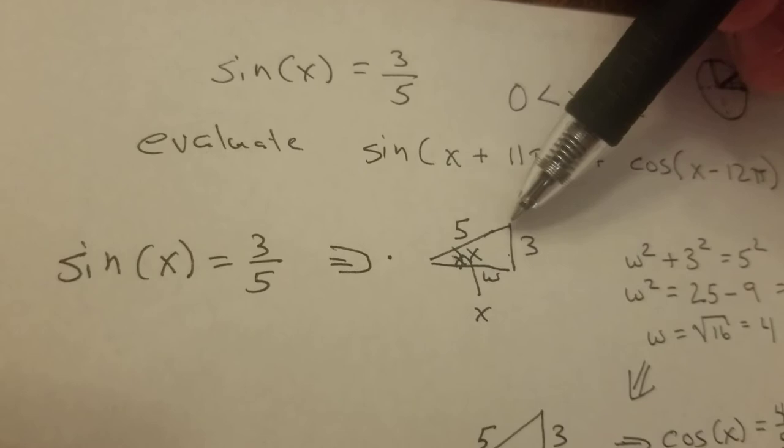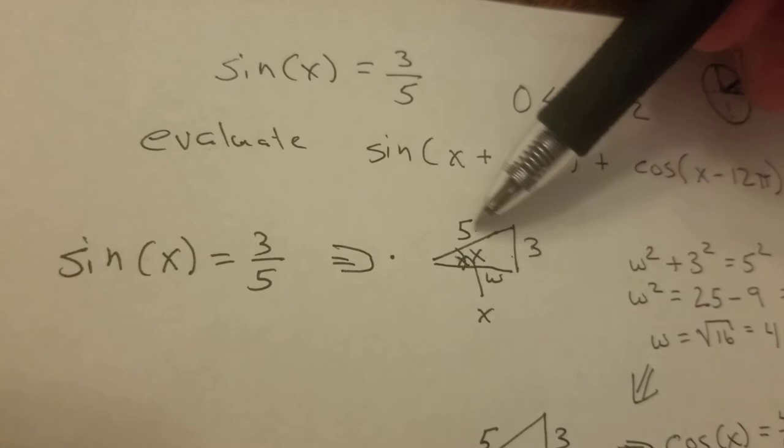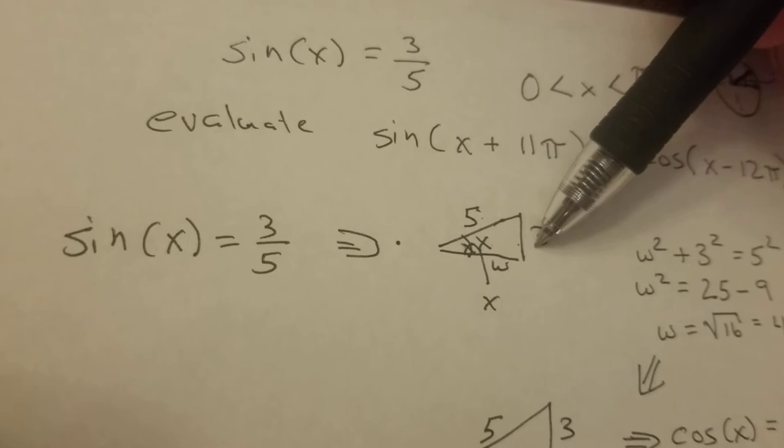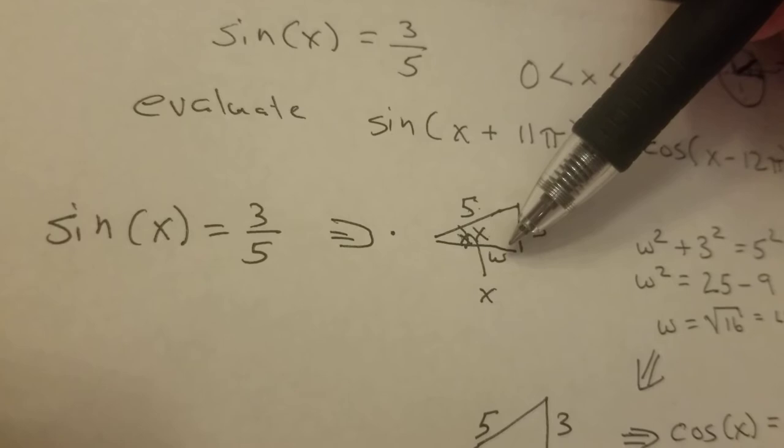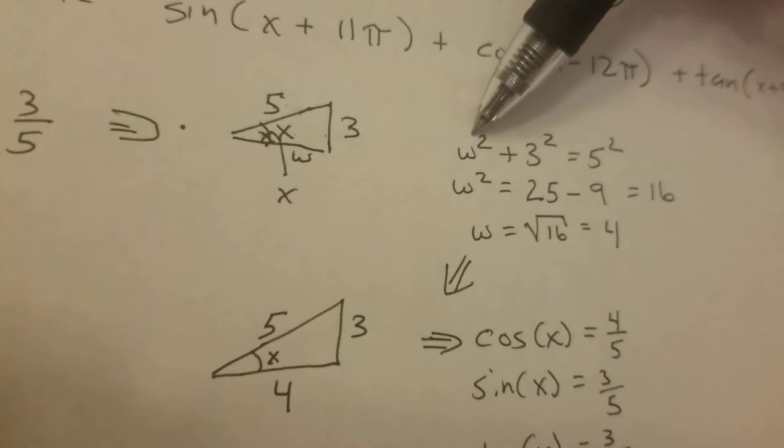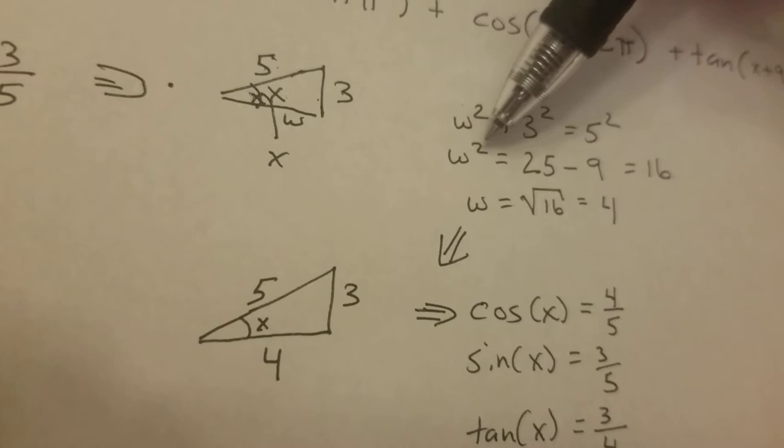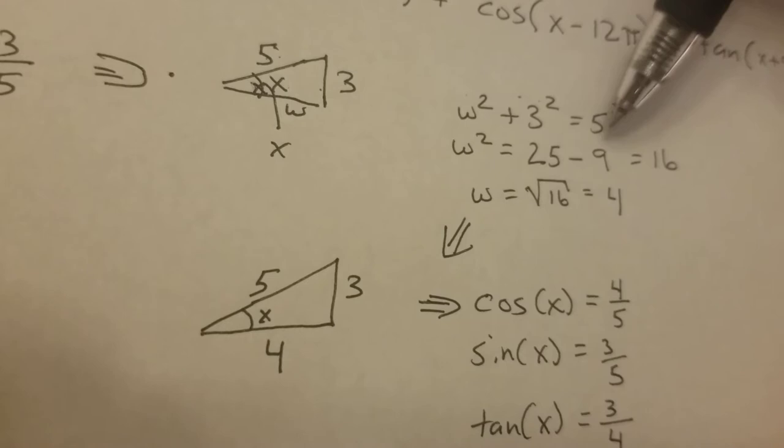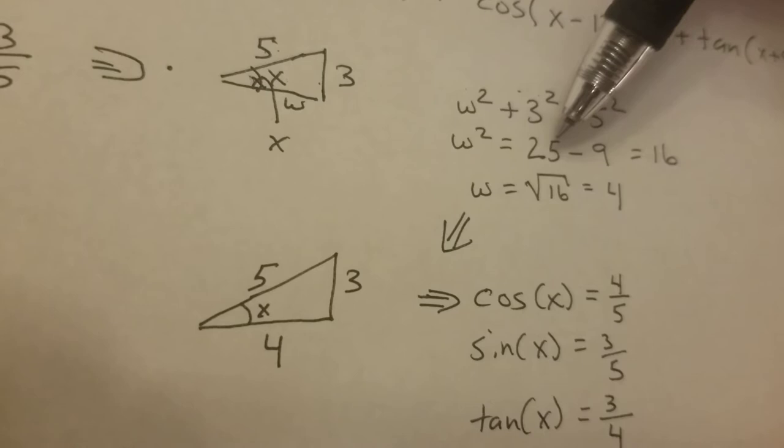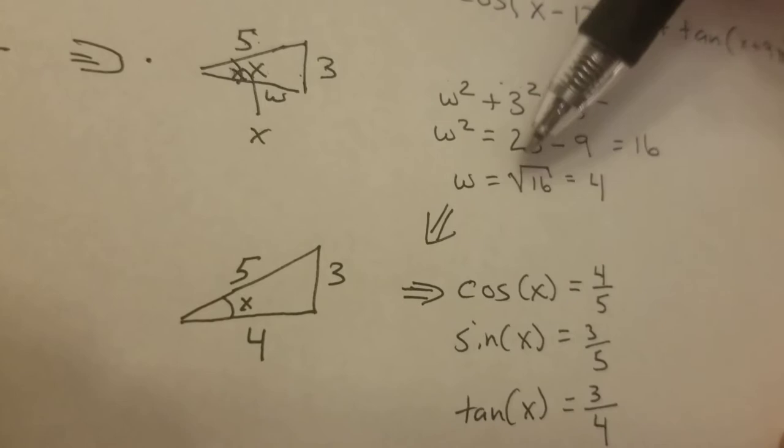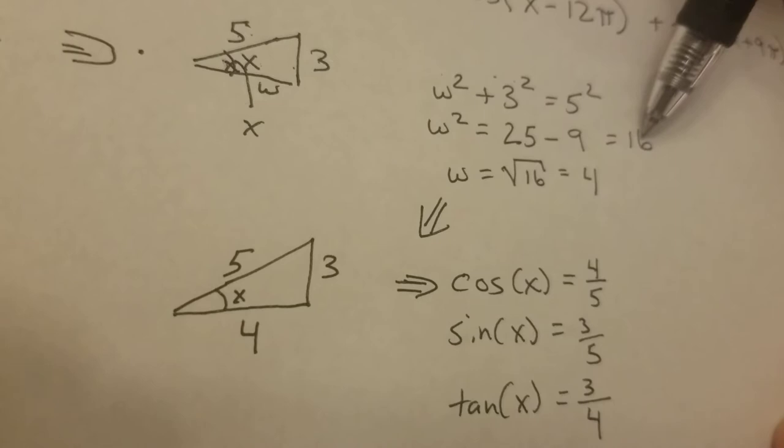Sine means the opposite over the hypotenuse. So they told you sine of x is 3 over 5. I've got a triangle, 3 over 5. And I know Pythagorean theorem, a squared plus b squared equals c squared. So I labeled this side w. I said w squared plus 3 squared equals the hypotenuse squared, w squared plus 3 squared equals 5 squared. So let's solve for what this other side is. W squared equals 5 squared is 25, minus 9. So w squared equals 25 minus 9, which is 16. So w equals the square root of 16, so w equals 4.